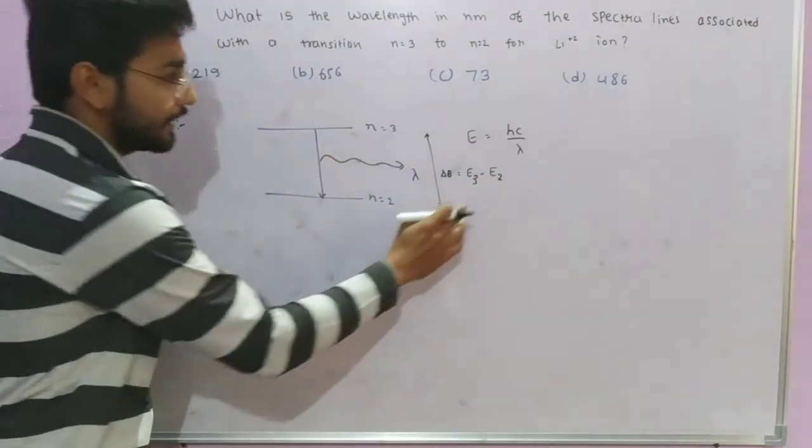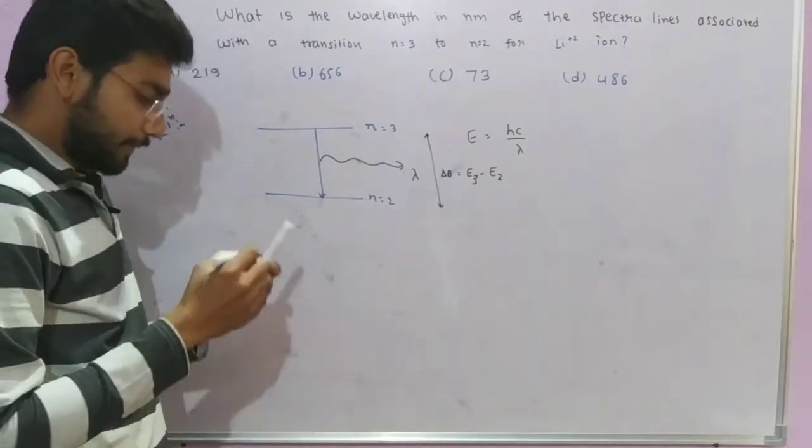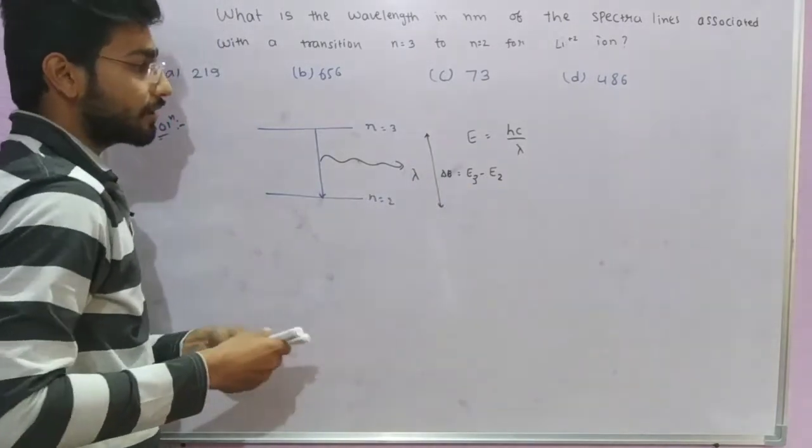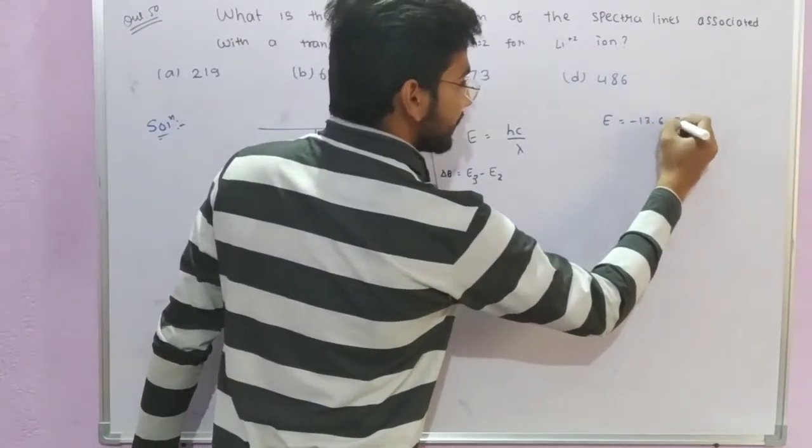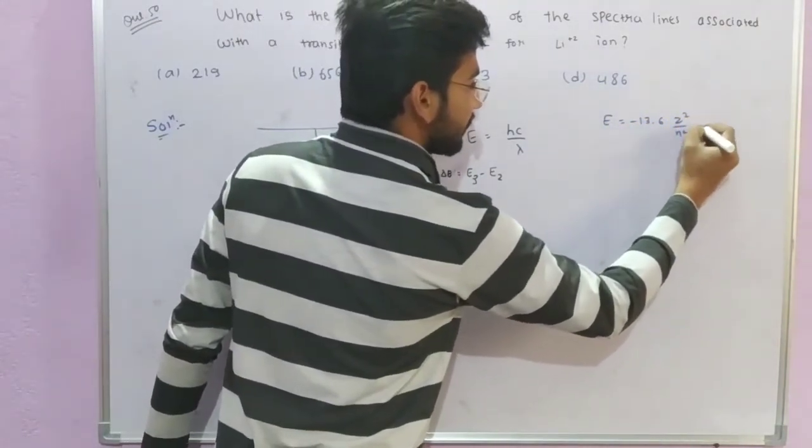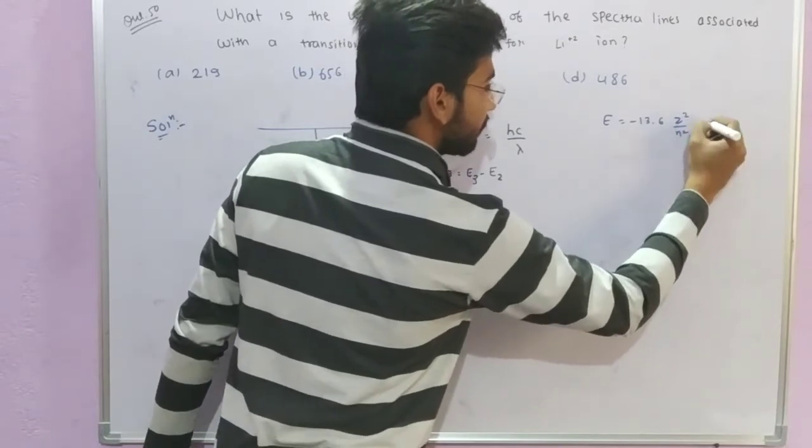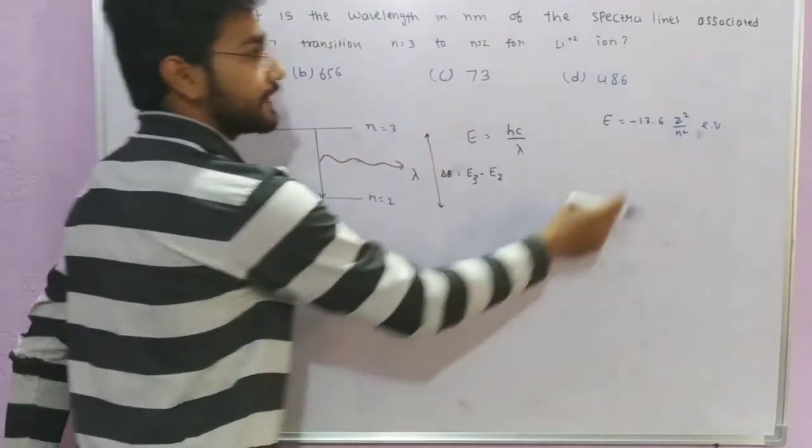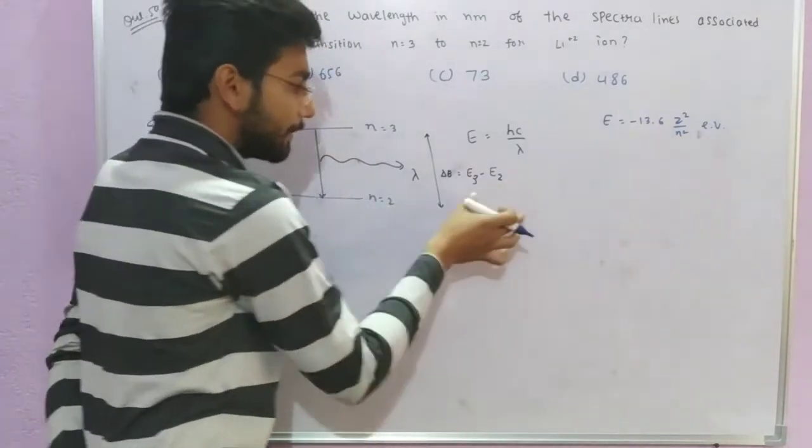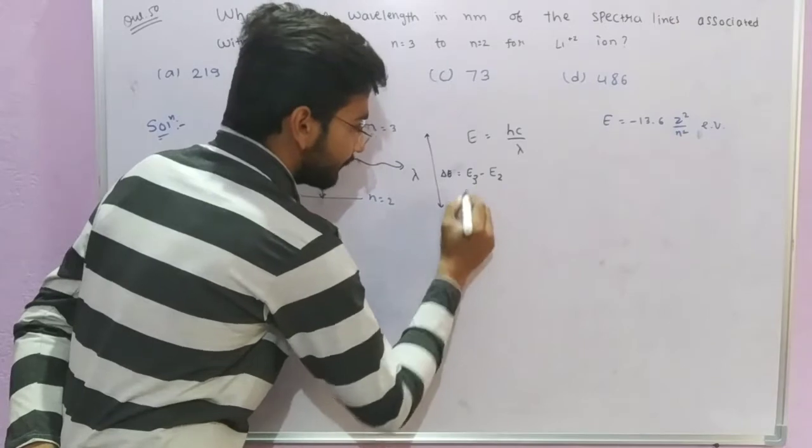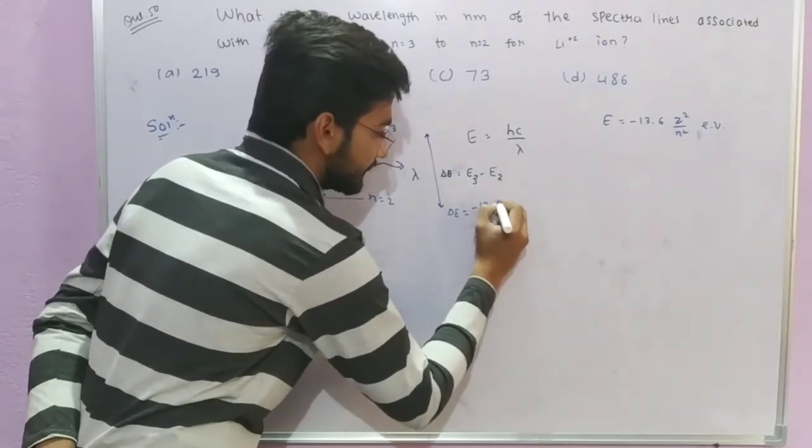The energy for hydrogen-like atoms when electron is at higher energy level is minus 13.6 z² upon n² electron volts, where n is the shell number. Now we have to calculate delta E, which is minus 13.6 z² upon n₁² for the third shell.